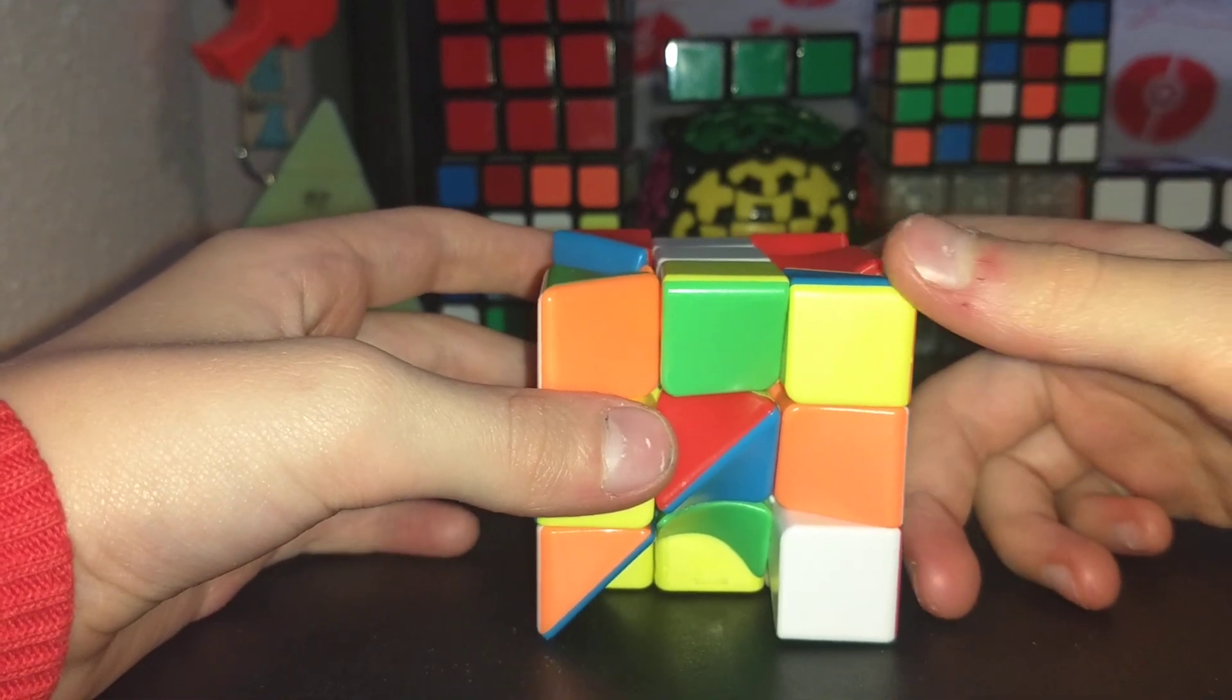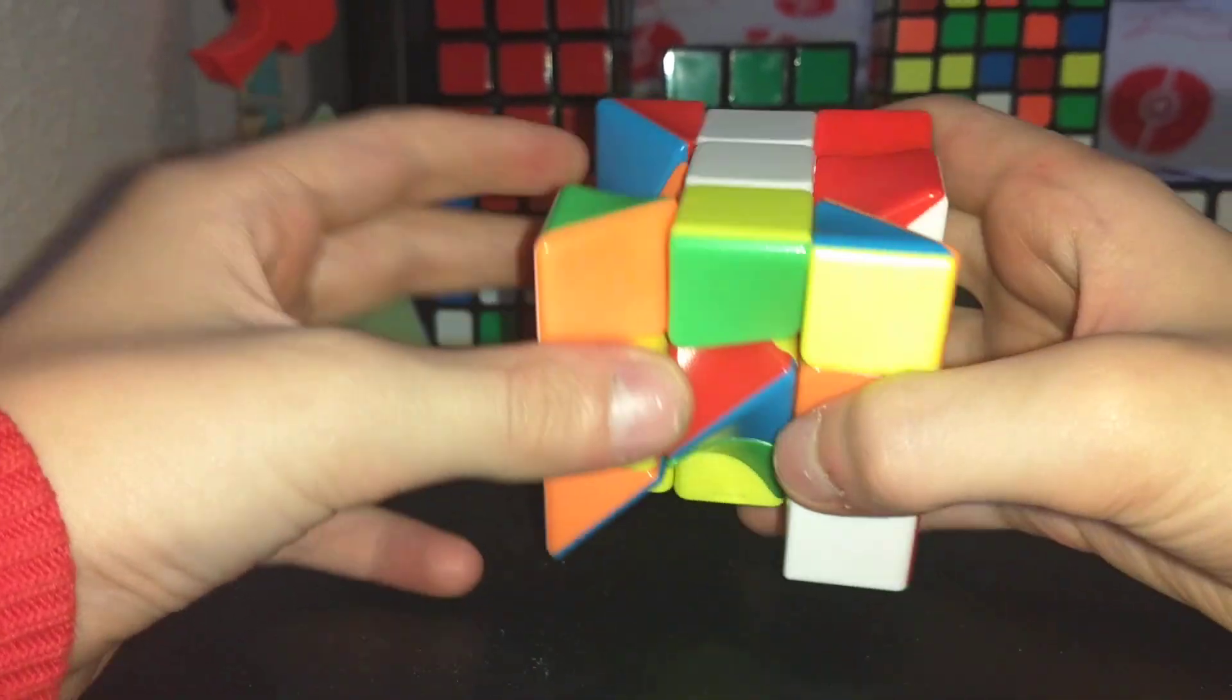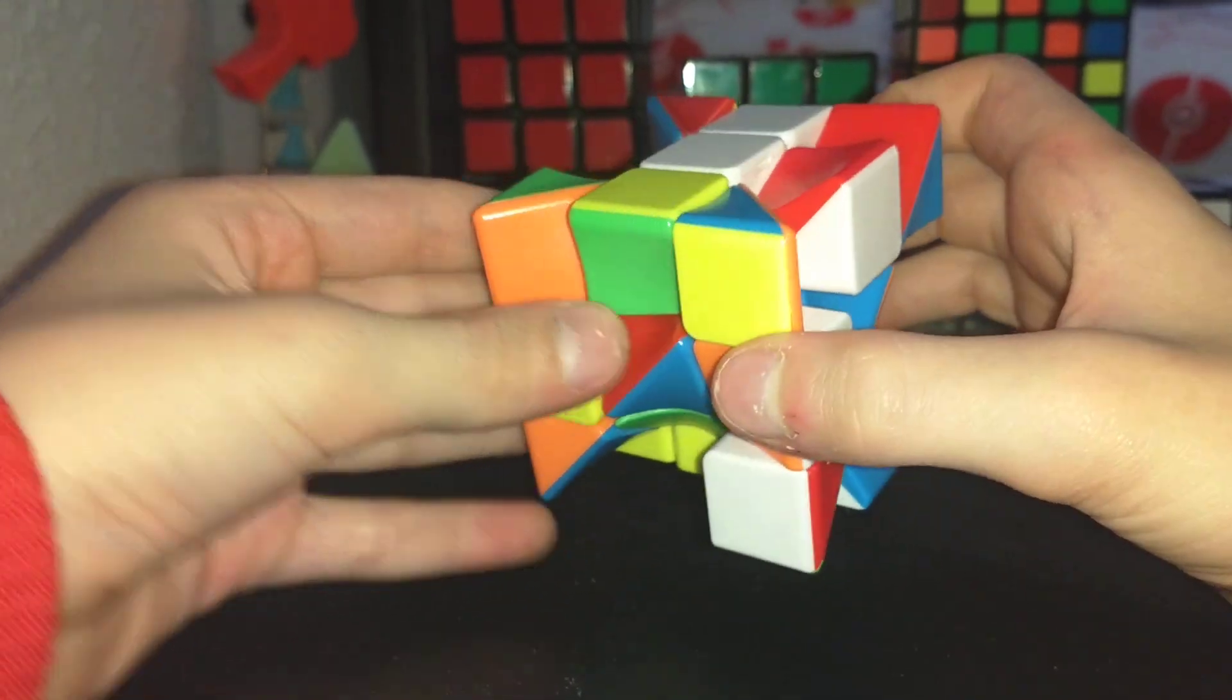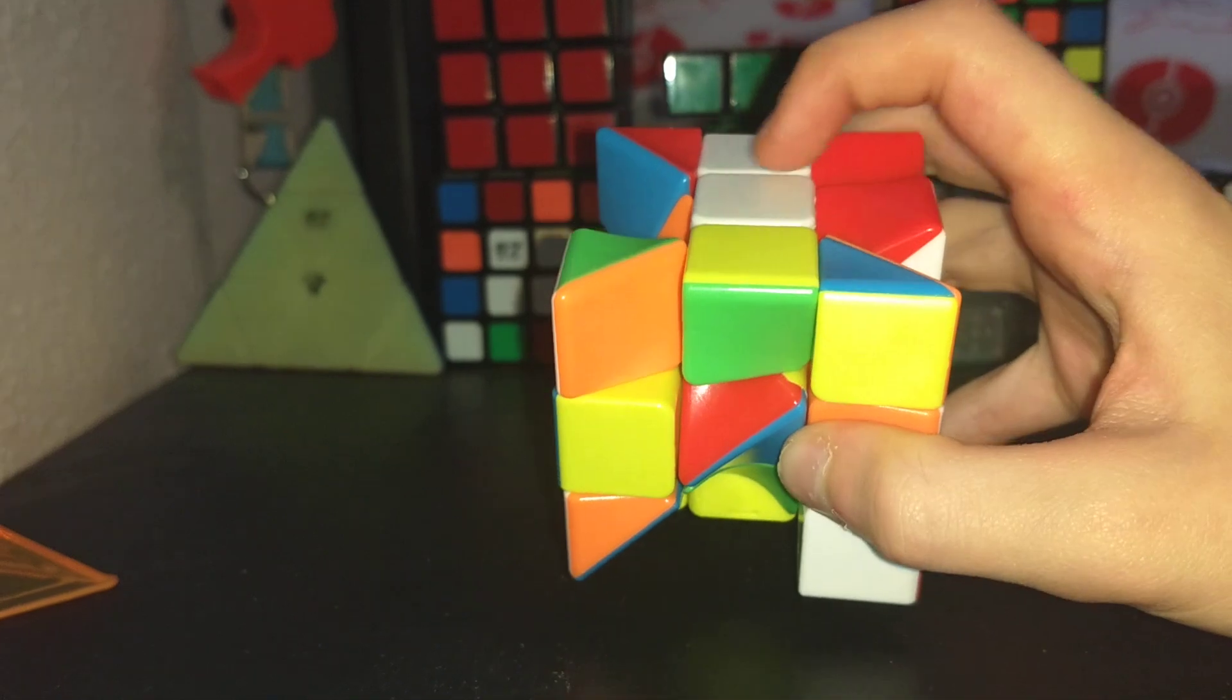Okay, so basically, to start off with the tutorial, you need to have a Twist Cube. And what you want to do next is you want to find the white side, which happens to be on the top here.